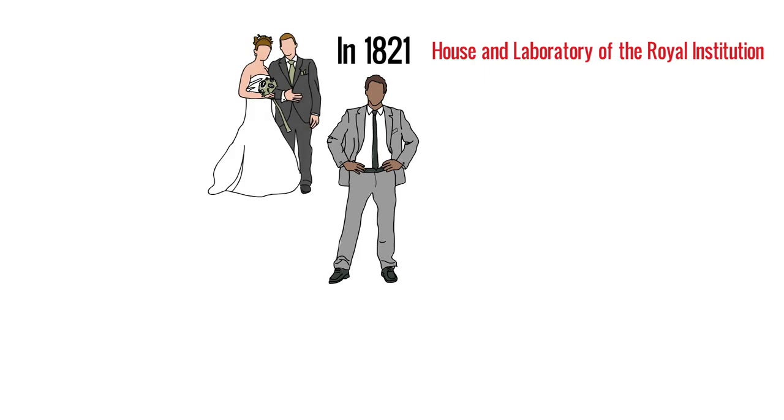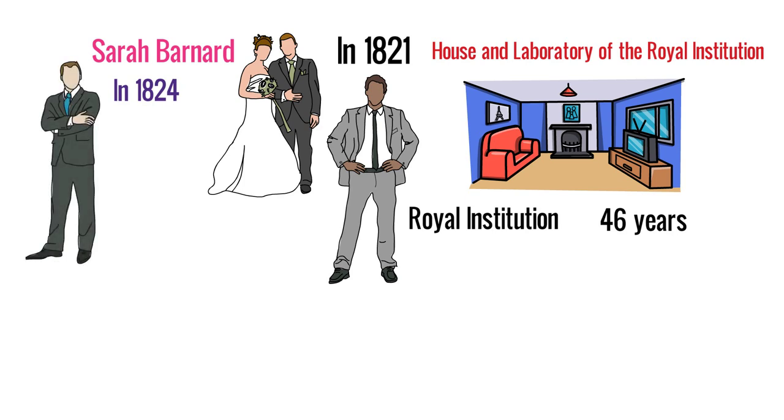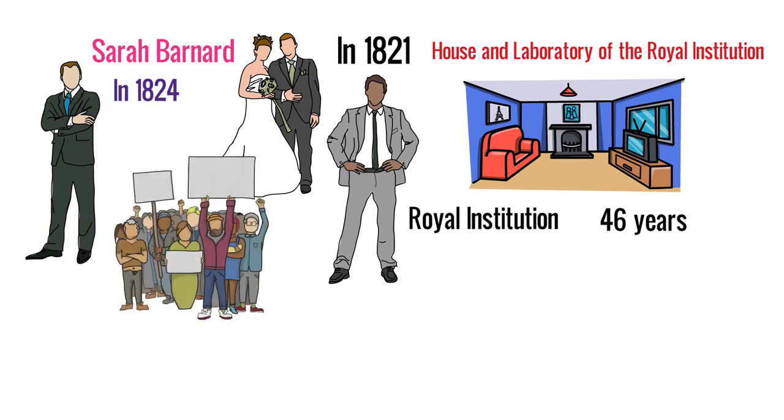He married Sarah Barnard. He and his bride lived in the rooms in the Royal Institution for most of the next 46 years. In 1824, at the age of 32, he was elected to the Royal Society. This was recognition that he had become a notable scientist in his own right.